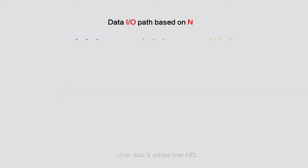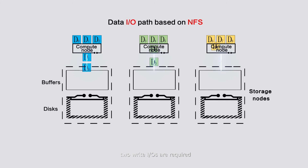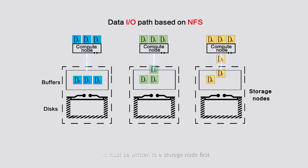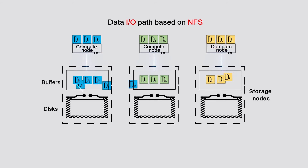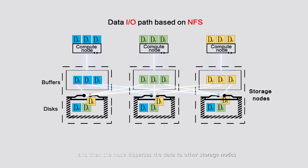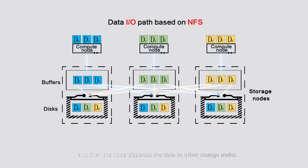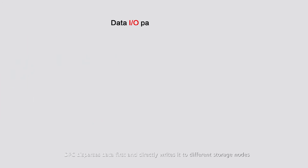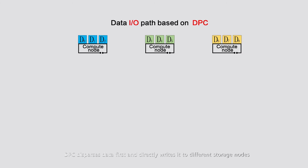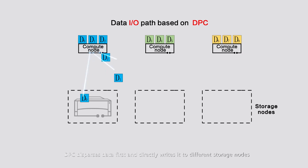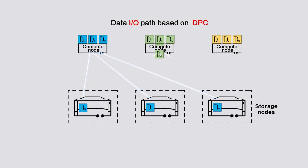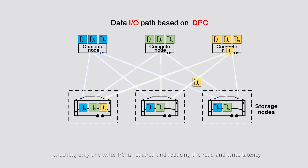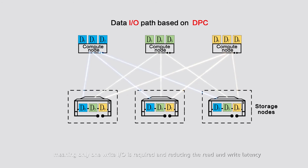When data is written over NFS, two write IOs are required: it must be written to a storage node first, and then the node disperses the data to other storage nodes. DPC disperses data first and directly writes it to different storage nodes, meaning only one write IO is required, reducing read and write latency.